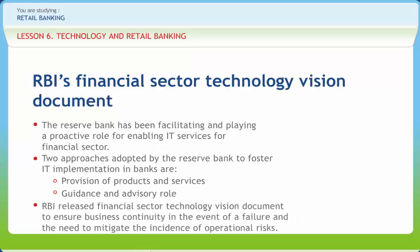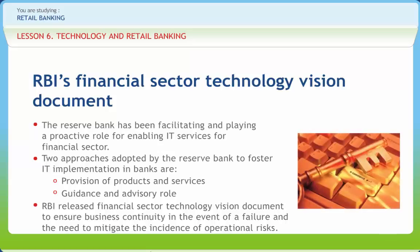RBI released its Financial Sector Technology Vision document to ensure business continuity in the event of a failure and to mitigate the incidence of operational risk. The public sector banks face the biggest challenge since they carry the baggage of legacy procedures and have to change over to the latest technology to cater to the needs of all their branches, including those at rural centers. The foreign banks have systems which are generally based on worldwide implementations. The vision document proposes specific attention to percolation of technology efforts to all types of banks and all sections of customers, with specific reference to rural areas.